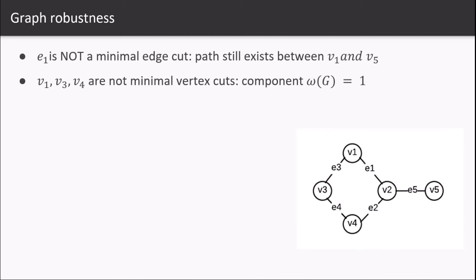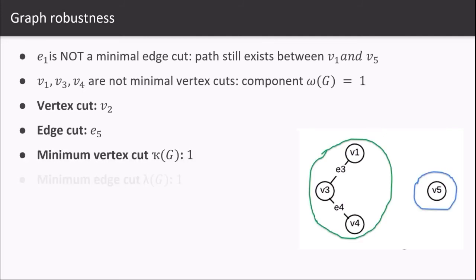v3, v1, and v4 are also not the minimum vertex cut because G is still a single component consisting of two vertices v2 and v5 with an edge e5. So the vertex cut in this example is v2. If we remove this, we will end up in two components of the graph, and the edge cut here is e5. The minimum vertex cut is one and the minimum edge cut is one as well.